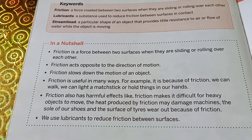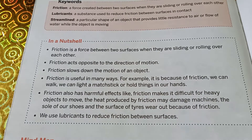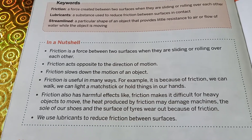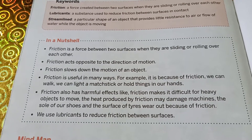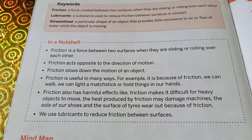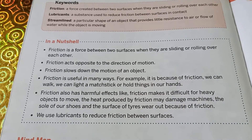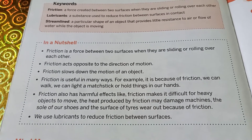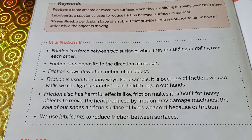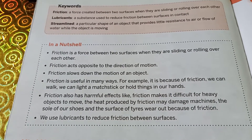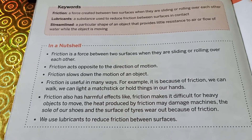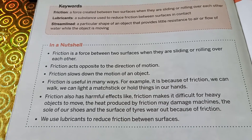Another way by which we can reduce friction is by making objects or bodies streamlined — giving objects a particular shape so that friction is reduced. For example, birds, fish, aeroplanes, and cars have streamlined bodies so that friction is reduced and the object can move easily.